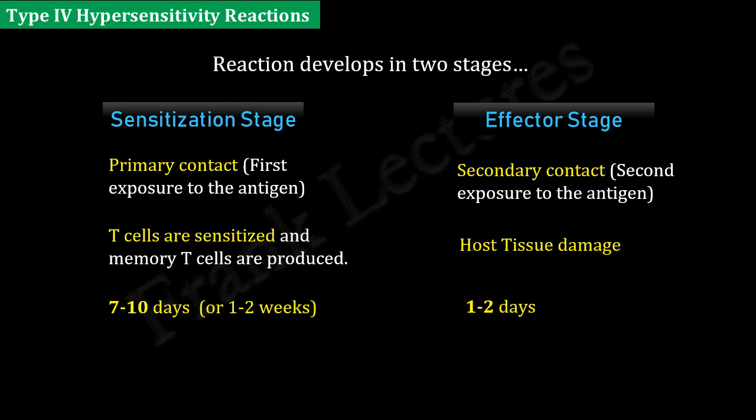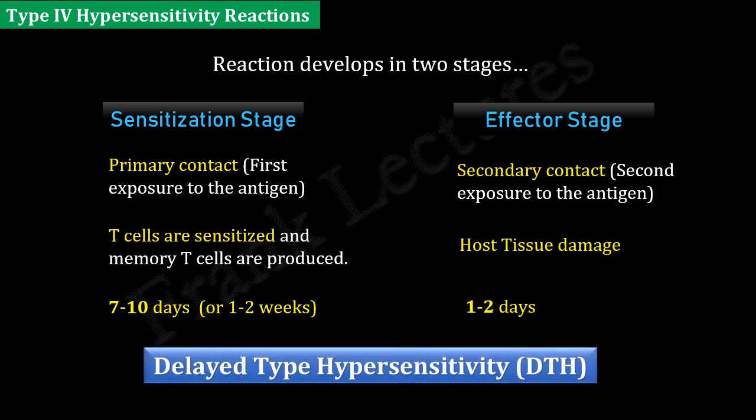This delay in the manifestation of type 4 hypersensitivity reactions is the hallmark of these reactions. The delay is due to the time taken by T-cells for activation, differentiation, and cytokine and chemokine secretion. Also, the recruitment of macrophages and other leukocytes to the site of antigen exposure takes time. For this reason, type 4 hypersensitivity reactions are also known as delayed type hypersensitivity, abbreviated as DTH.